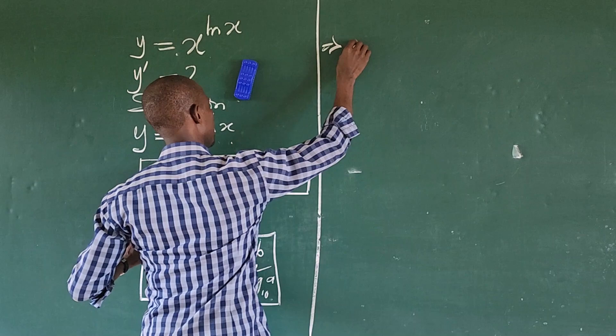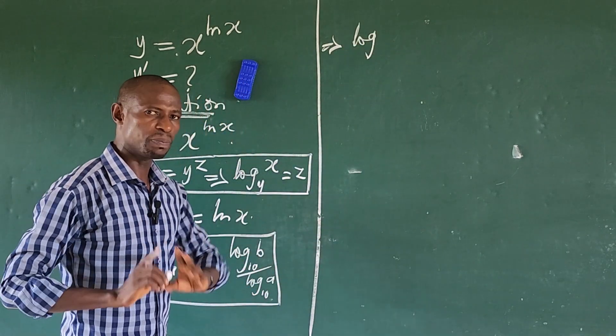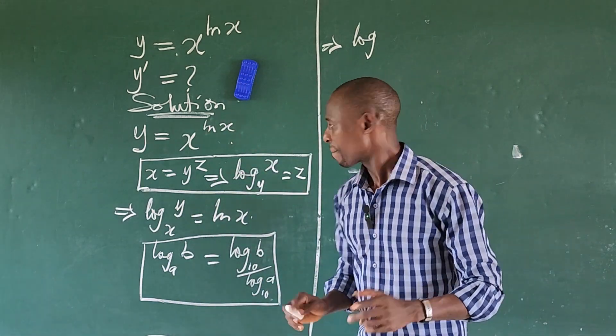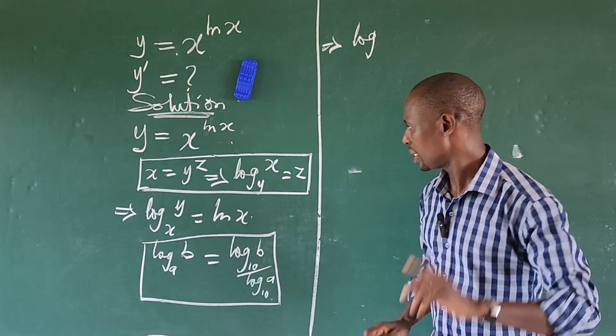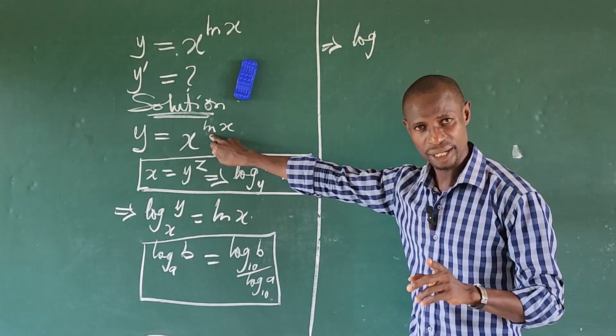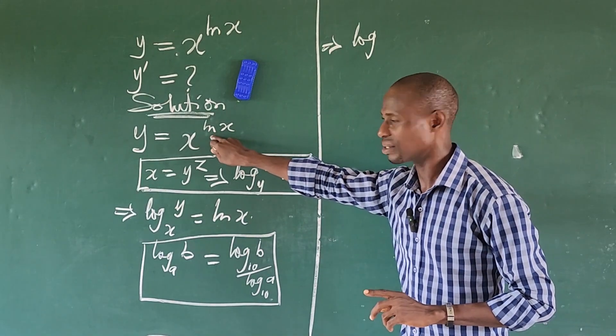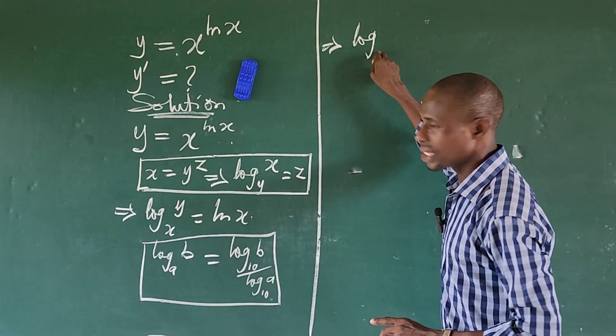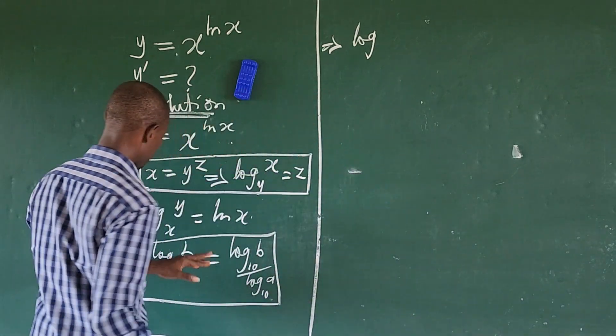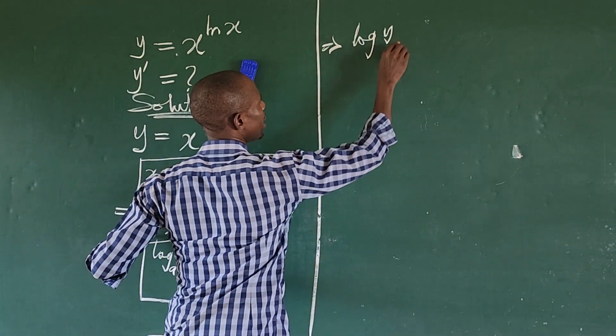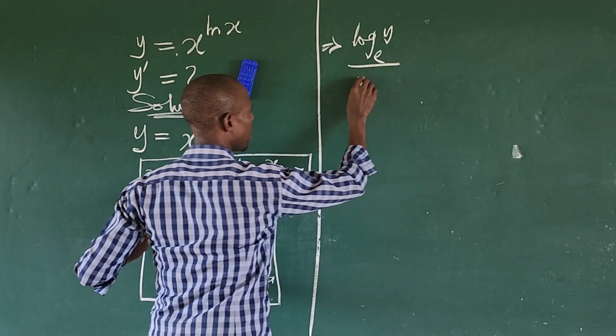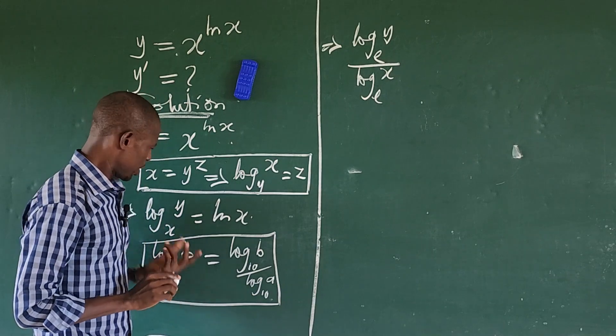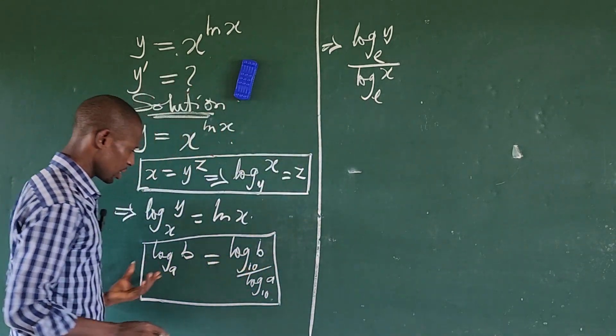I want to apply that law now. So I want to change the base. The question is, to what base are we changing this to? I want to change this to the natural base which is e. Why am I changing it to natural base e? Because of the ln we have here. I'm taking it to base e because of the presence of this ln, because this ln is base e also. So we're going to have log y base e over log x base e.